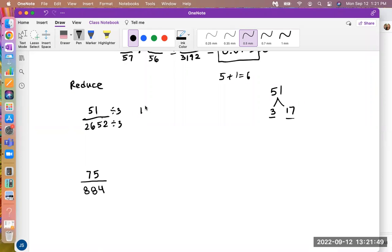And then 2652 divided by 3, we just found in our calculator, it's 884. Okay. Let me just double check. That was 2652 divided by 3, and I got 884. Okay.